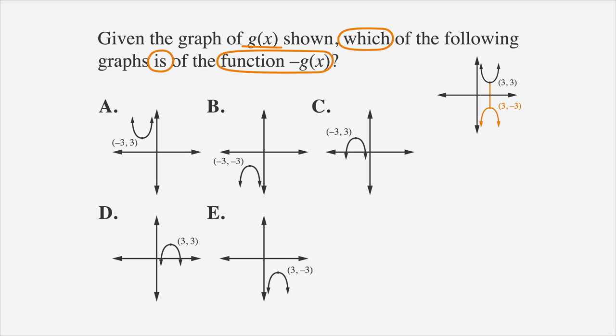Let's look at the answers and start eliminating unrealistic choices. We'll draw the original graph on each to help us visualize. We can easily eliminate choice A since it's reflected over the y-axis, not the x-axis. Notice that choice D didn't reflect the function over the x-axis — instead, the parabola was reflected over the line y equals 3, so choice D can also be eliminated. Among other errors, choices B and C are on the wrong side of the y-axis, so let's eliminate them. That leaves us with choice E — that's the correct answer.